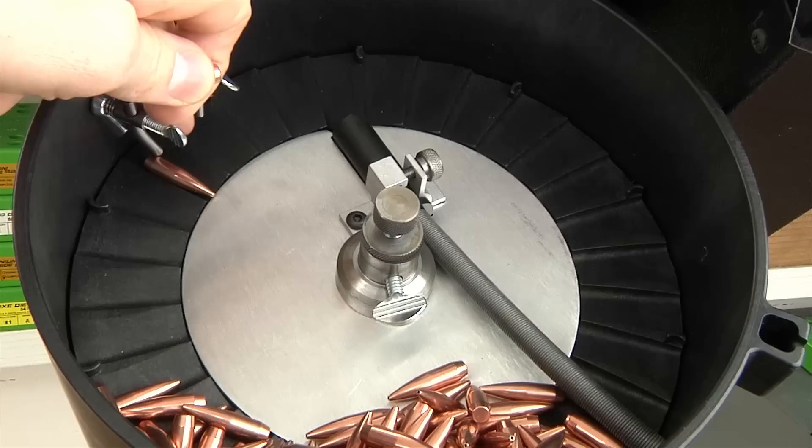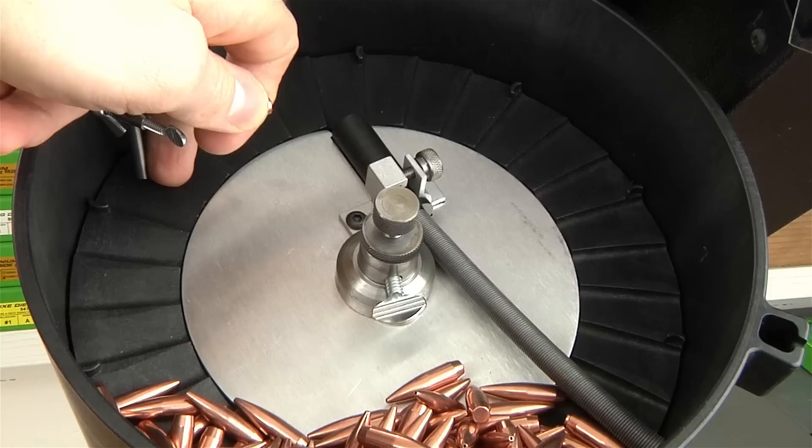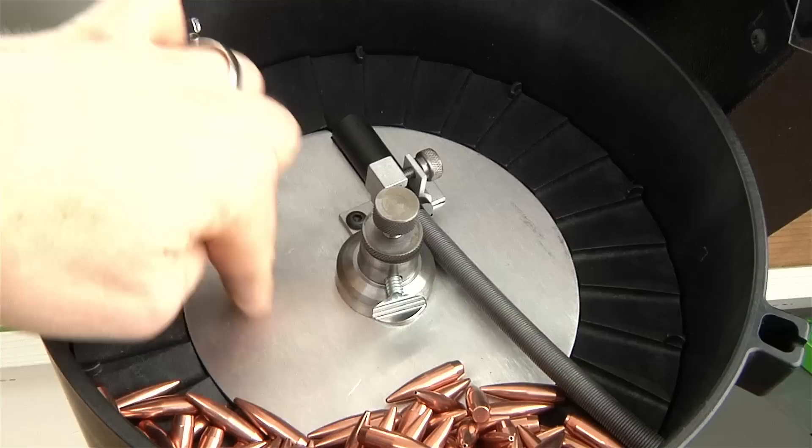The first is these bullet wipers. You can see here we have a bullet that's oriented backwards, and as it sweeps up around the top, it's going to get kicked off. But if we have a bullet that's oriented correctly, it's going to sit here against the guide plate.